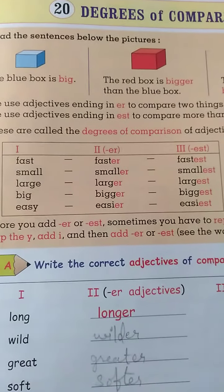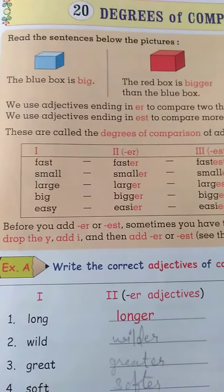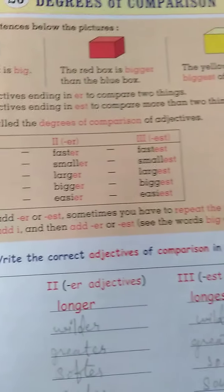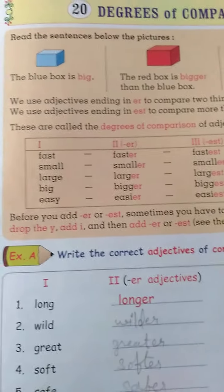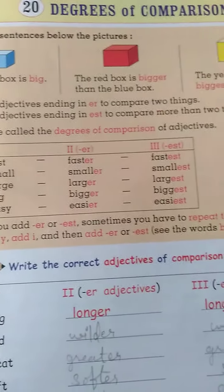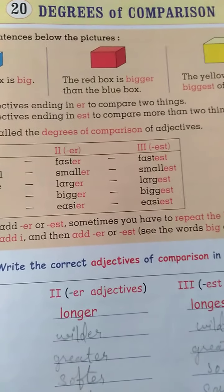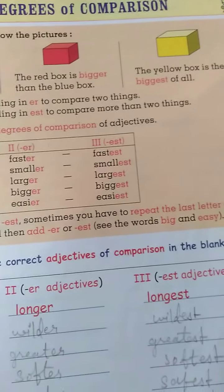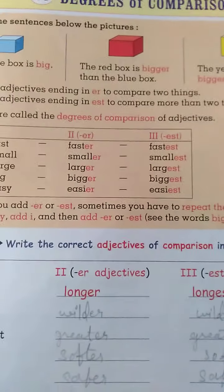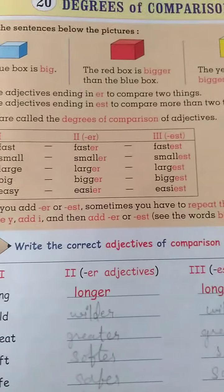What are the degrees of comparison? Your three pictures are: the blue box, the red box, and then yellow. The blue box is big. The red box is bigger than the blue box. The yellow box is the biggest of all. That means big, bigger, biggest.